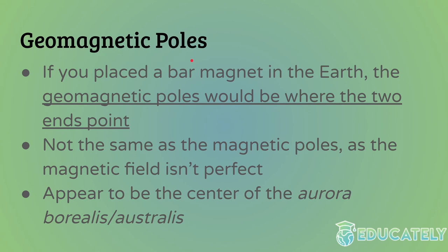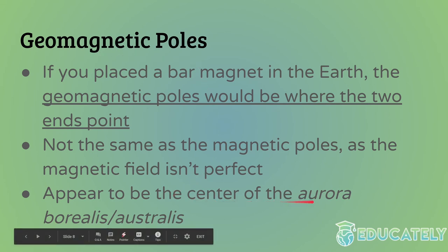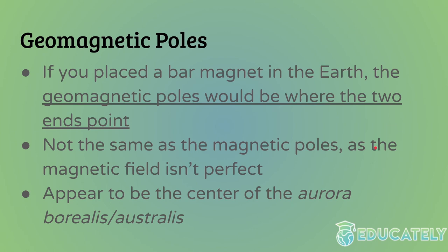One important thing to note about the geomagnetic poles is that they appear to be at the center of where the northern lights — the aurora borealis — occur, and in the southern hemisphere, where the southern lights — the aurora australis — occur. There's a ring around which the lights are visible, and at the very center of that ring is approximately where the geomagnetic poles are.